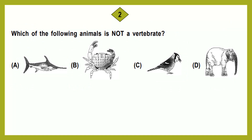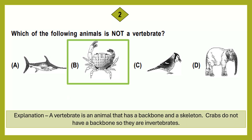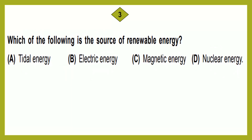Question number 2: Which of the following animals is not a vertebrate? Option A: hammerhead shark. Option B: crab. Option C: bluejay. Option D: elephant. The correct answer is option B, crab. A vertebrate is an animal that has a backbone and a skeleton. Crabs do not have a backbone, so they are invertebrates.